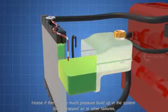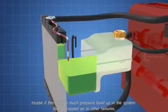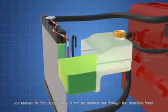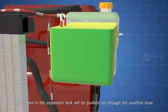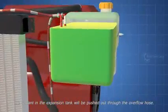In case if there is too much pressure build up in the system due to trapped air or other failures, the coolant in the expansion tank will be pushed out through the overflow hose.